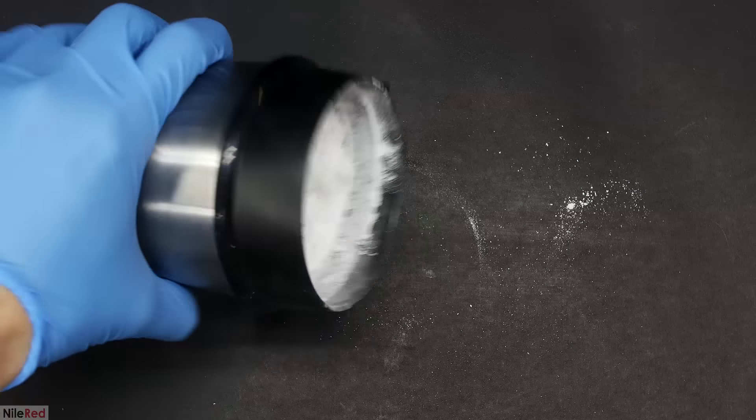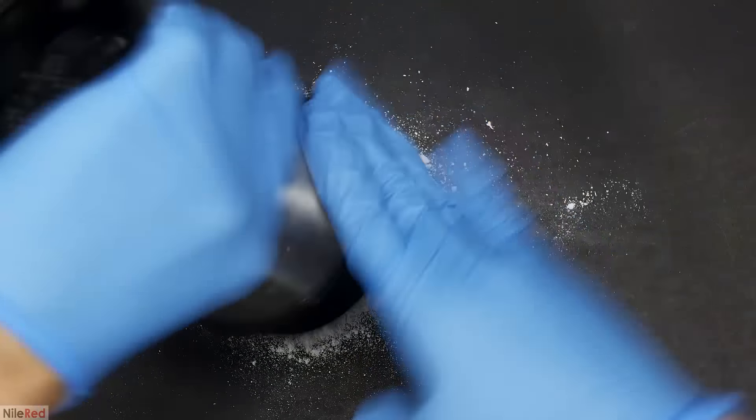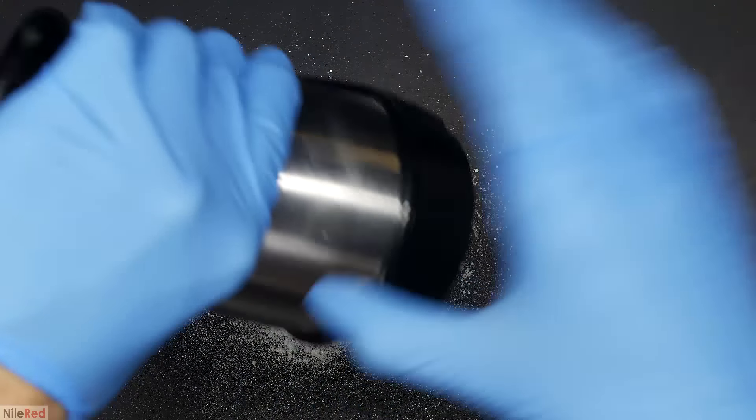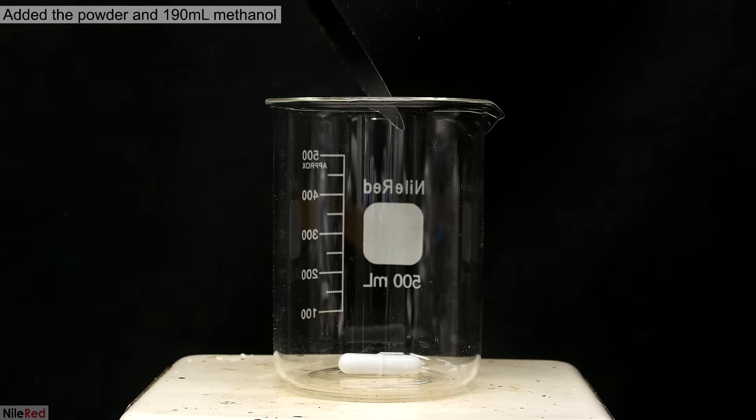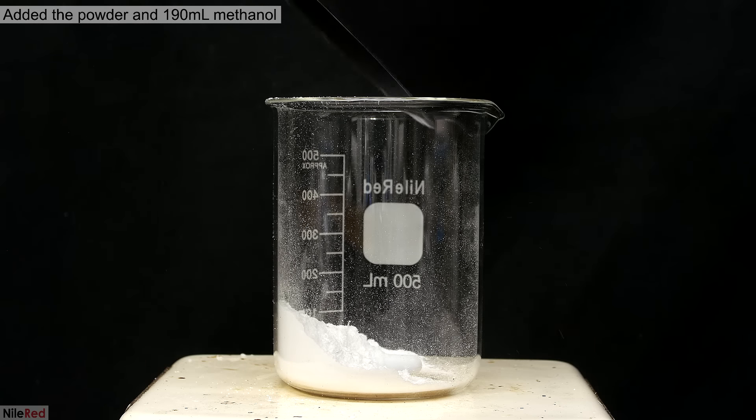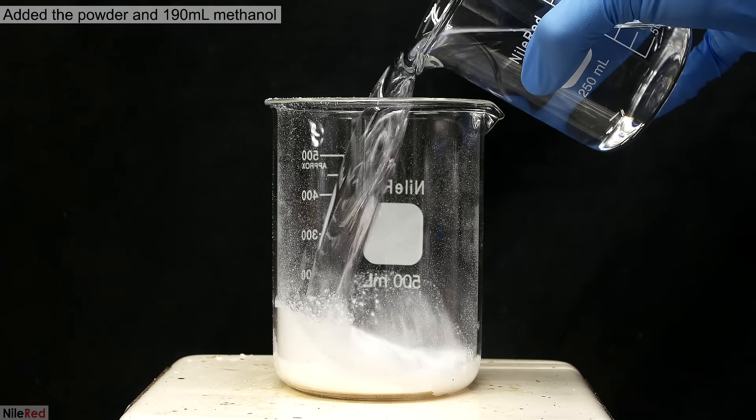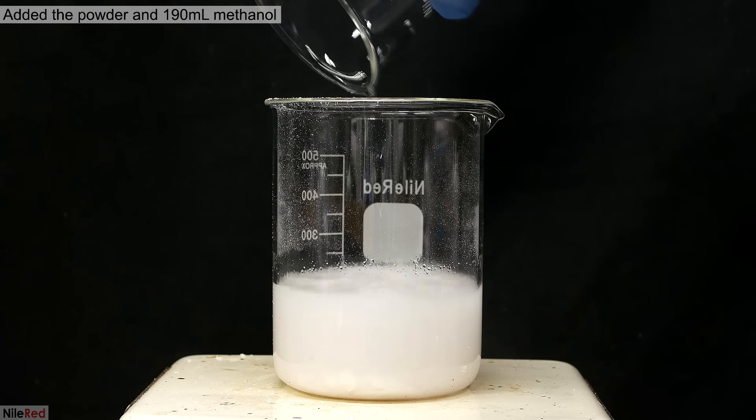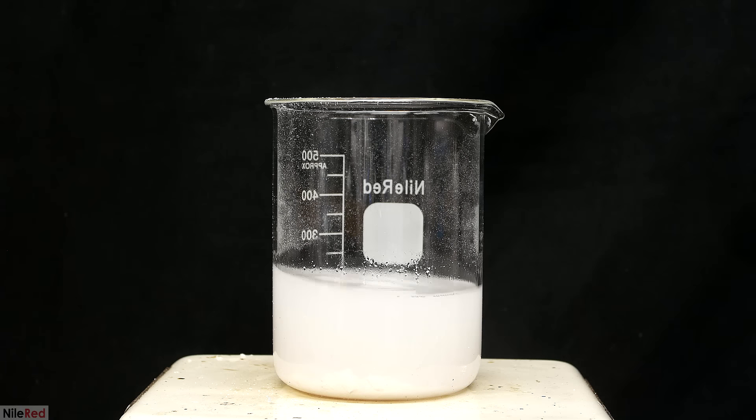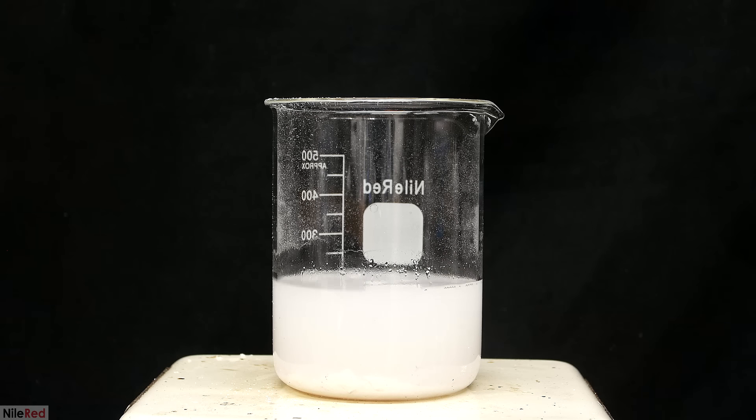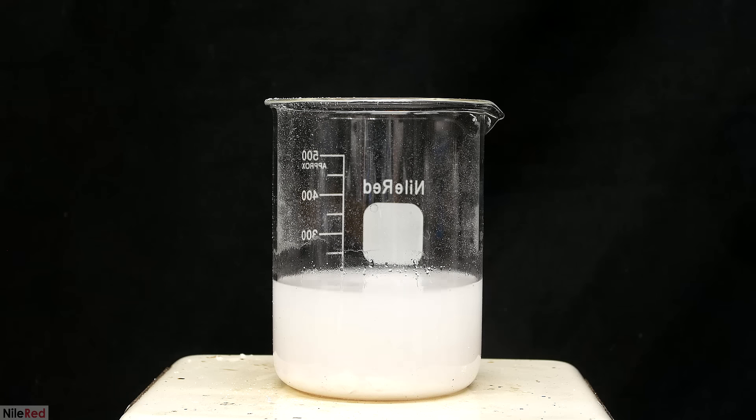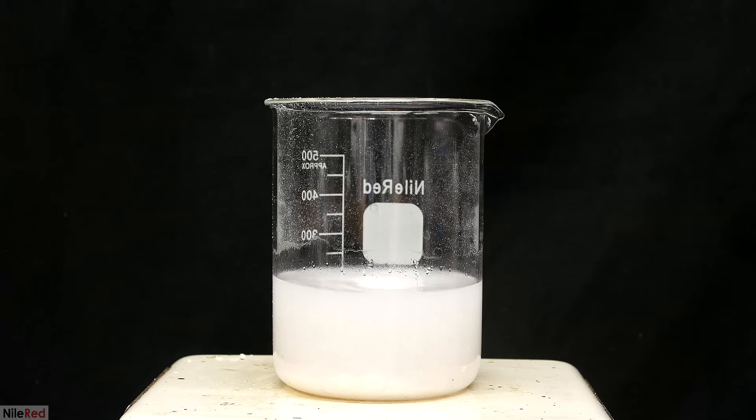I pour it out, and then I manually scrape off any powder that might be stuck inside, and add it to the pile. All of the powder is poured into a beaker, and on top of it, I dump in 190 milliliters of methanol. I turn on the stirring, and I let it mix for about an hour. What I'm trying to do here is dissolve all of the aspirin, and leave behind the binders, and the other junk that they include in the pills.